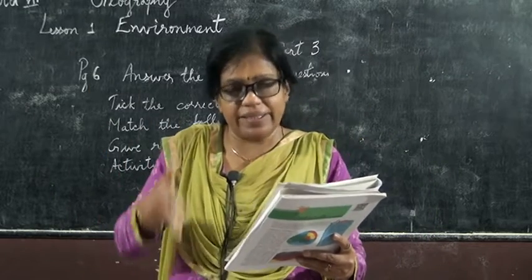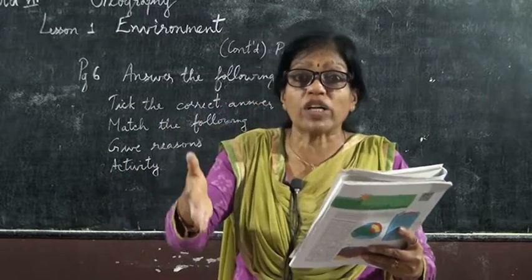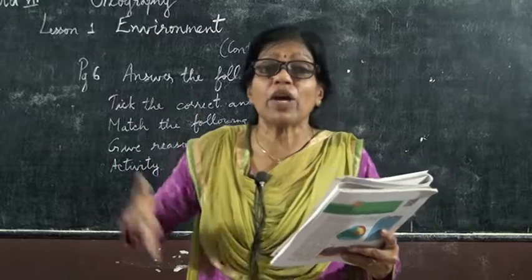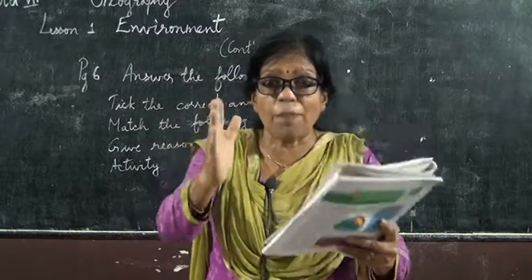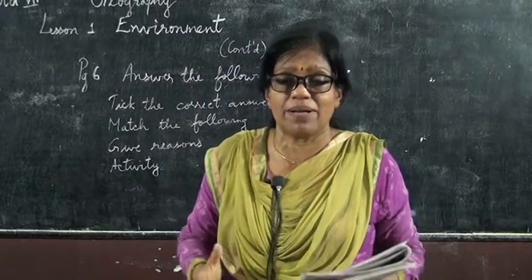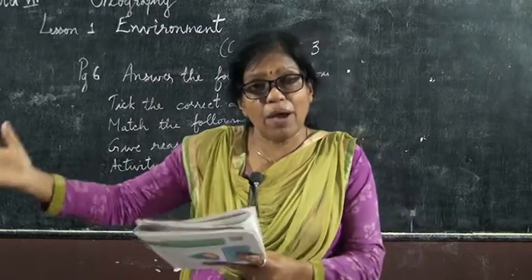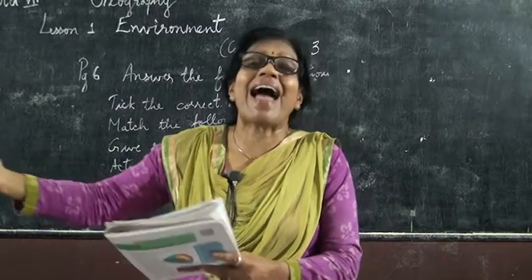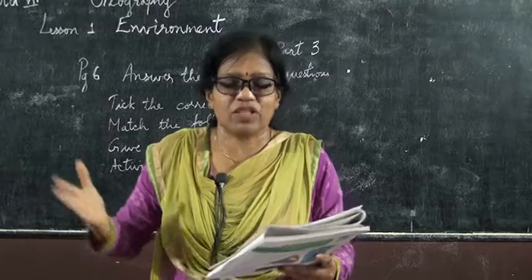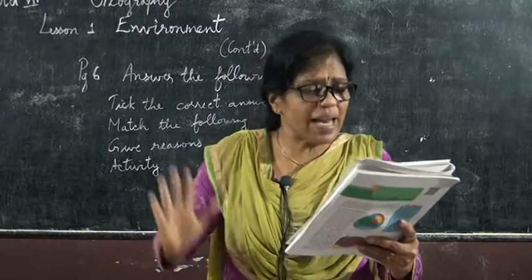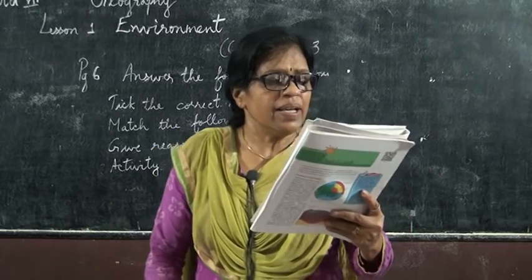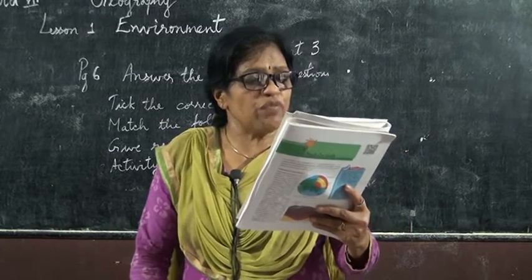In that, biotic and abiotic also belong. Biotic means all plants and animals. Abiotic means land. So these are natural environment.